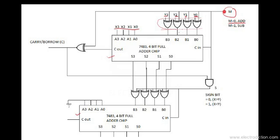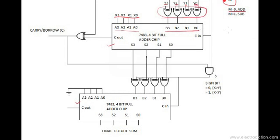This is exactly what occurs when we are executing the addition process. This first set of four XOR gates becomes transparent, and these bits are sent into the inputs to the first 7483 chip. So the B3, B2, B1 and B0 bits are nothing but the Y3, Y2, Y1 and Y0 bits respectively. The carry-in bit is 0 since M is set to 0.